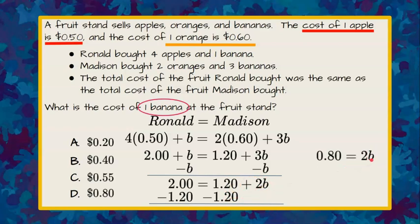To solve for b, we're going to divide each side by 2. 80 cents divided by 2 is 40 cents, and that equals b. So we can conclude that one banana is 40 cents.